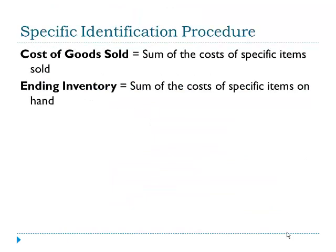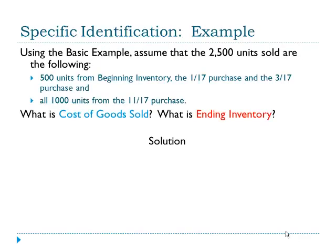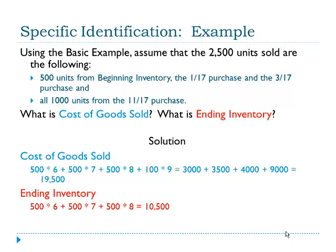The specific identification procedure puts the sum of costs of specific items into cost of goods sold and takes that cost out of inventory, leaving inventory with the sum of costs of the specific items actually on hand. In our basic example, we need additional information. Let's say the 500 units from beginning inventory, the January 17th purchase, the March 17th purchase, and all 1,000 units from the November 17th purchase are the ones sold. With that information, we end up selling items from every batch, resulting in a cost of goods sold of $19,500 and ending inventory of $10,500.